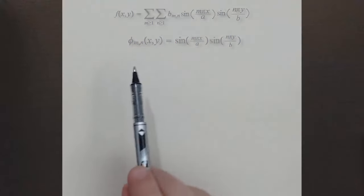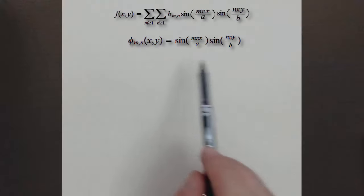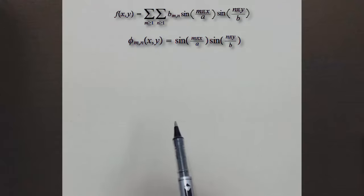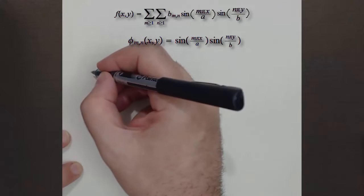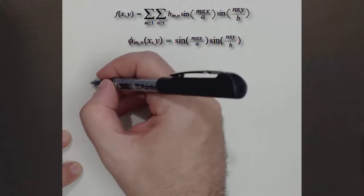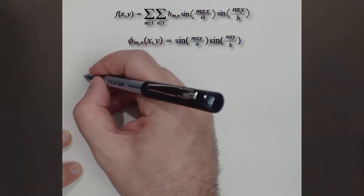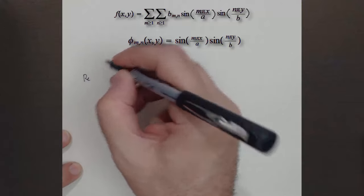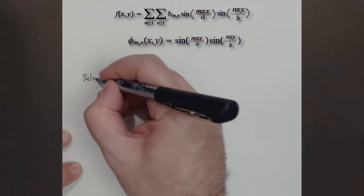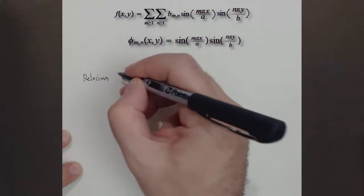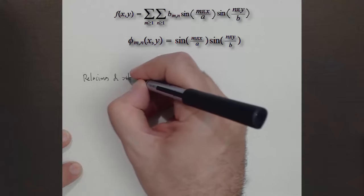La idea es desarrollar entonces a F como una doble sumatoria en serie de Fourier. Para ello vamos a utilizar algo muy similar a lo que ya hicimos en el caso del acuerdo vibrante, vamos a utilizar lo que se conocen como las relaciones de ortogonalidad.